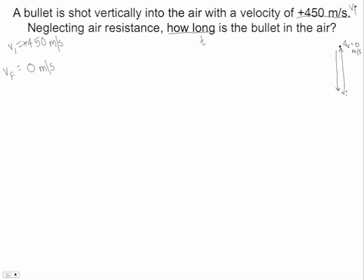So we can use an initial velocity of 450 meters per second, and they gave us a plus, that lets us know it's up. And then our final velocity is going to be zero meters per second. So it's starting at this initial, it's going up, it stops, and then it comes back down. And so we want to know how long the bullet is in the air, so that's a time.